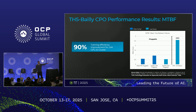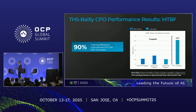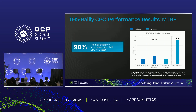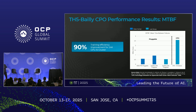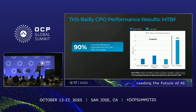This is the money slide — it's showing a 90% training efficiency improvement on a cluster of 24,000 GPUs, based on mean time between failures for CPO versus pluggables. We've been talking about CPO being lower power and lower cost — but this is something different. This is about saving: you have clusters running jobs, and a link flap forces everyone back to the last checkpoint. With CPO, those checkpoints and training jobs continue for much longer, making your cluster more efficient. This is really one of the key values we see in CPO.